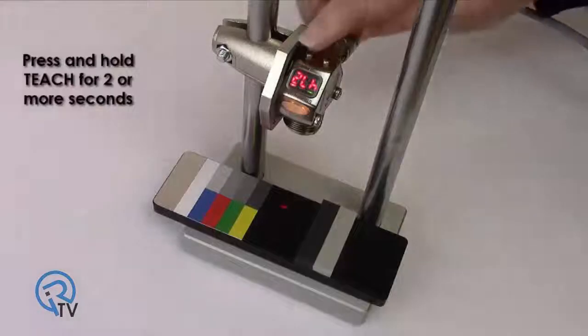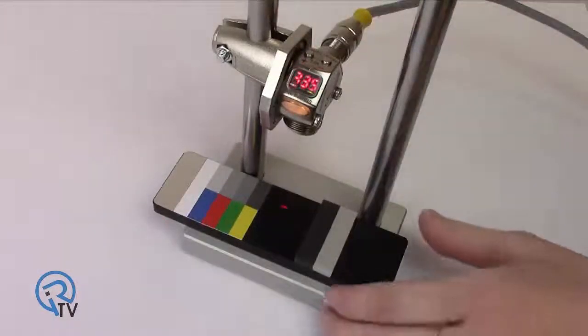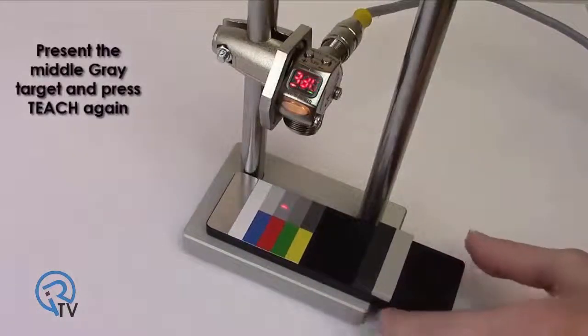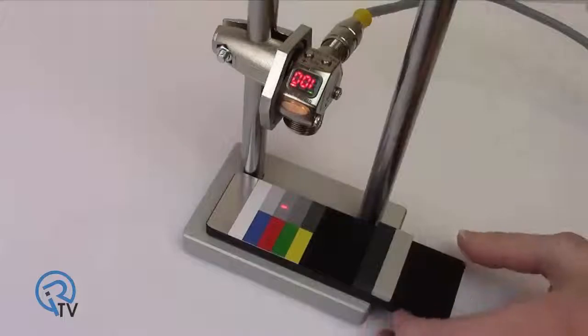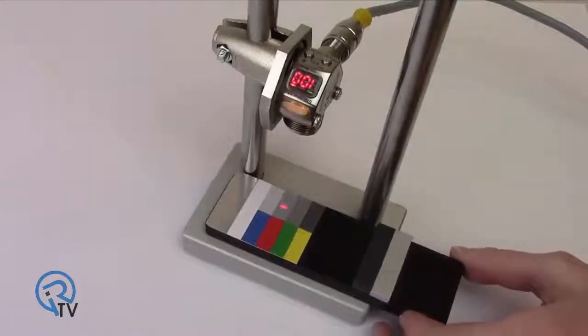Press and hold TEACH for two or more seconds. Present the middle gray target and press TEACH again. The sensor sets a new threshold and returns to RUN mode. The output only turns on for the taught target.